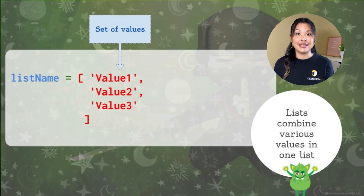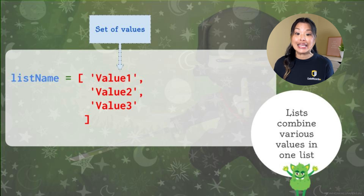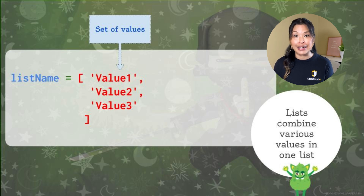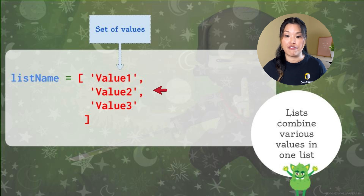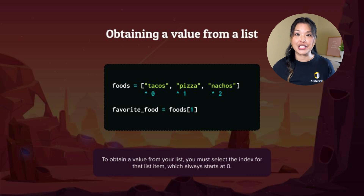In Python, a list is an ordered collection of data and it's mutable, meaning that it can be changed. Each element or value inside the list is called an item. Here we have an example of a Python list: list_name equals, and then our list is written inside of brackets. We've got three items: value one, value two, and value three. That's our whole list.